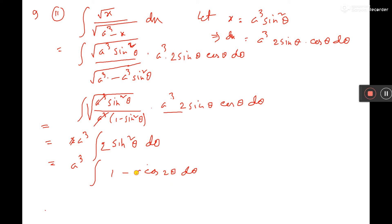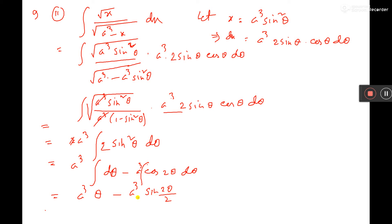So here also a cube, here it will be d theta. So here it is theta, and here it is theta, minus a cube, cos theta integration is sin 2 theta by 2, plus c, where c is the integrating constant.